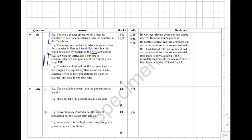For the mark scheme: two marks are available from information you can read off the graphs directly. The third mark requires reference to the large data set — for example, countries in East and Southeast Asia tend to have higher life expectancy than Sub-Saharan Africa, so their populations are older. You need to add that knowledge about those countries to access the third mark.